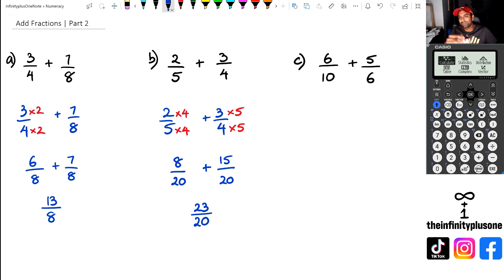So we don't actually need to multiply cross multiply as some people like to do. So in this case, I'm going to go six over 10, I'm going to leave a little bit of a gap plus five over six.